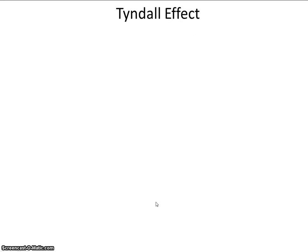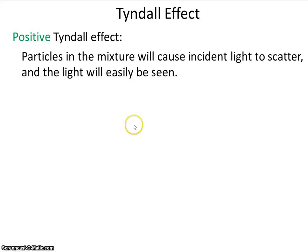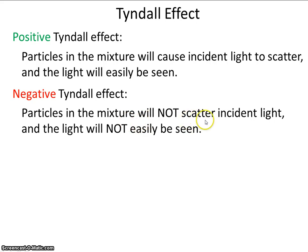Let's look at the Tyndall effect. A positive Tyndall effect can be achieved by shining a light or a laser through a beaker. If the light is refracted or scattered by the particles, that means it's a positive Tyndall effect — the particles cause incident light to scatter, and the light will easily be seen. A negative Tyndall effect is when the particles do not scatter the incident light and the light will not easily be seen. So a positive test is when you can see the light, and a negative test is when you can't see the light.